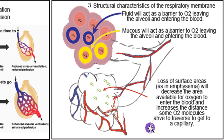With less surface area, there's less availability of oxygen reaching the blood capillary. Whether it's fluid, mucus, loss of surface area, scar tissue, or cancer filling the lungs — all of these decrease external respiration, reducing the amount of oxygen that can be loaded into the blood for step three.